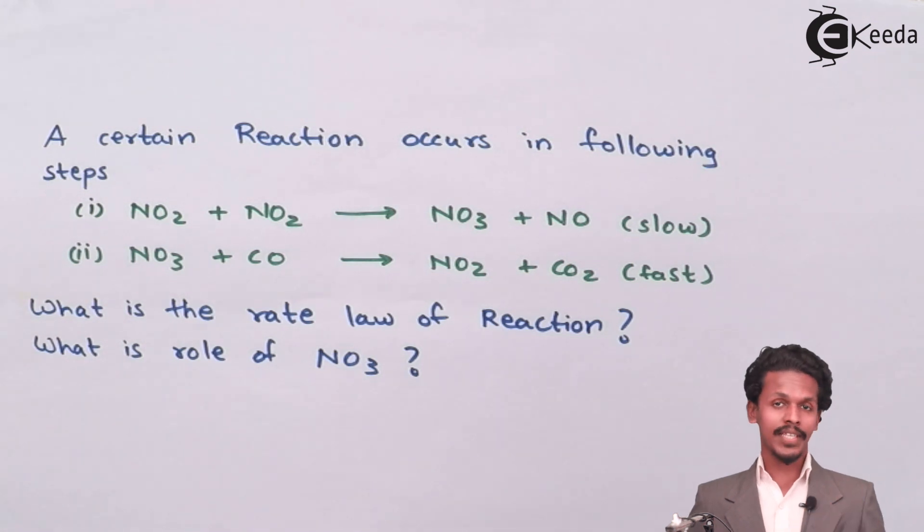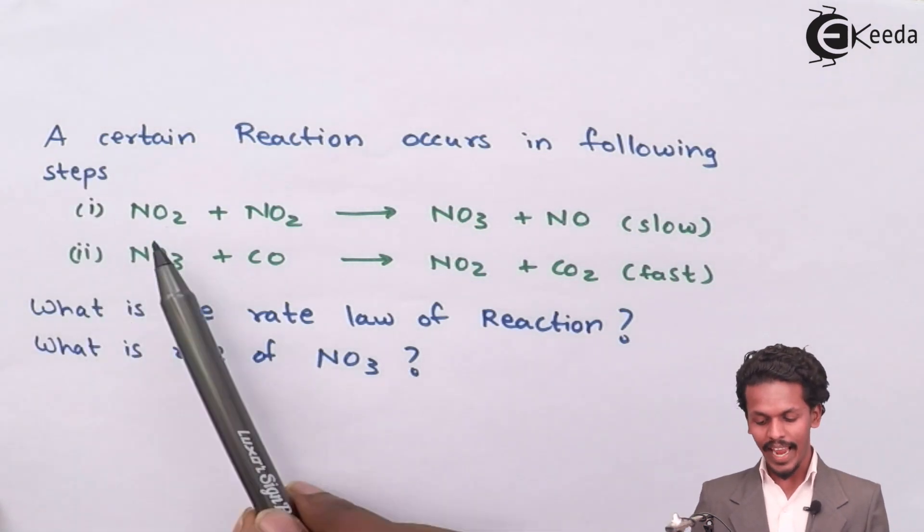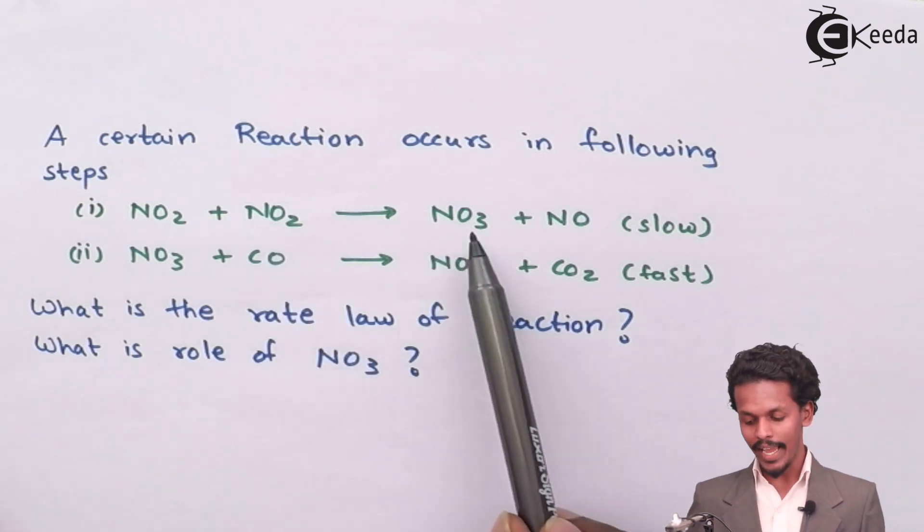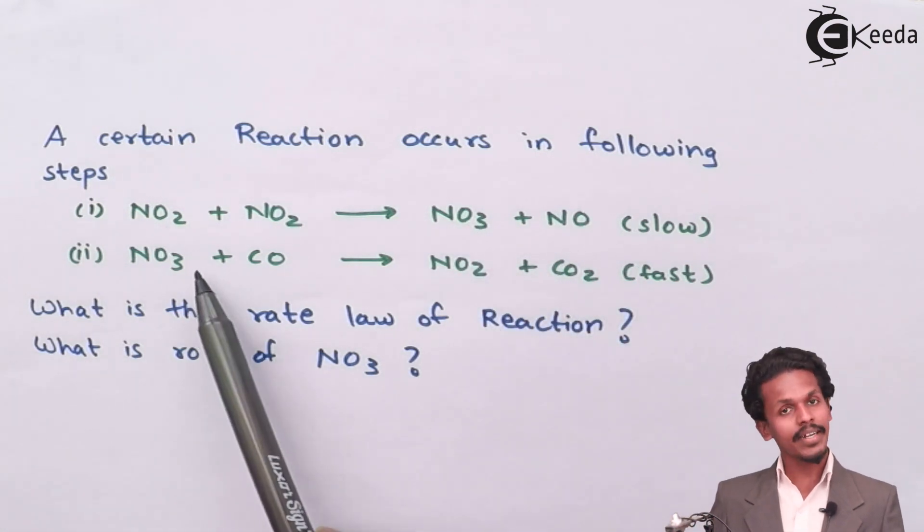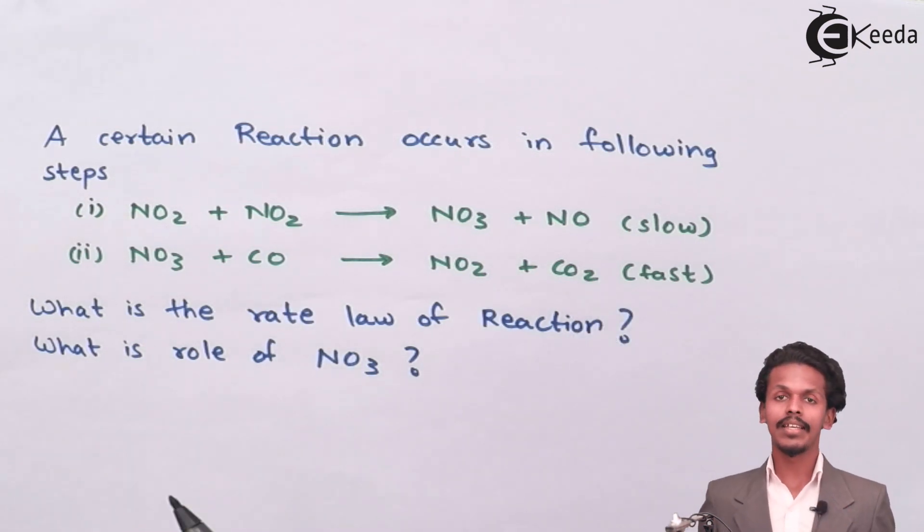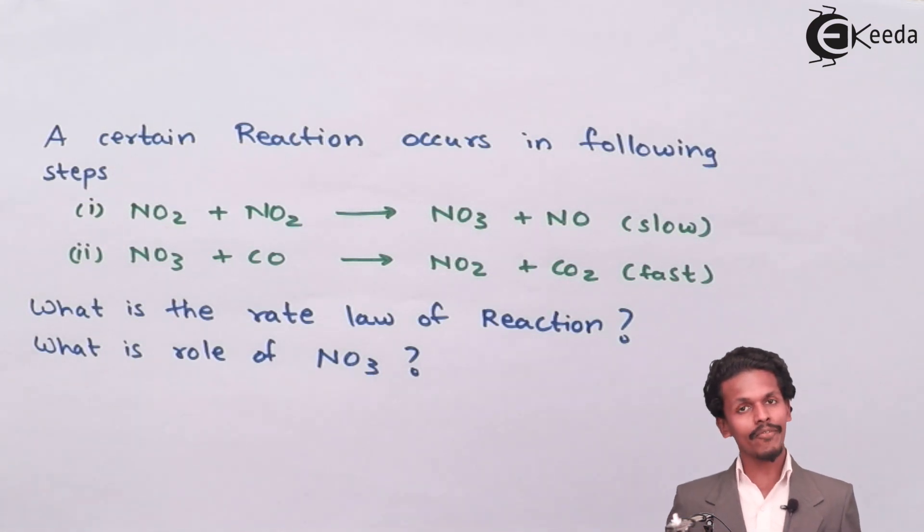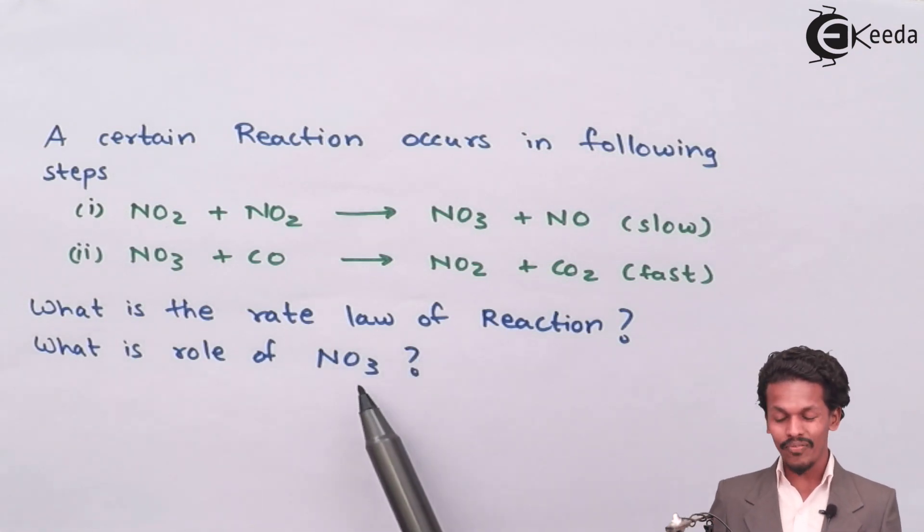As given on your screen, there is a reaction which is a two-step reaction, and on that basis we have to estimate the requirements. The reaction has been given as NO2 plus NO2 gives you NO3 plus NO, which is a slow step reaction. NO3 is repeated here and combines with CO to give NO2 and CO2, which is a fast reaction. Based on this, we have to estimate what is the rate law of the reaction and what is the role of NO3.